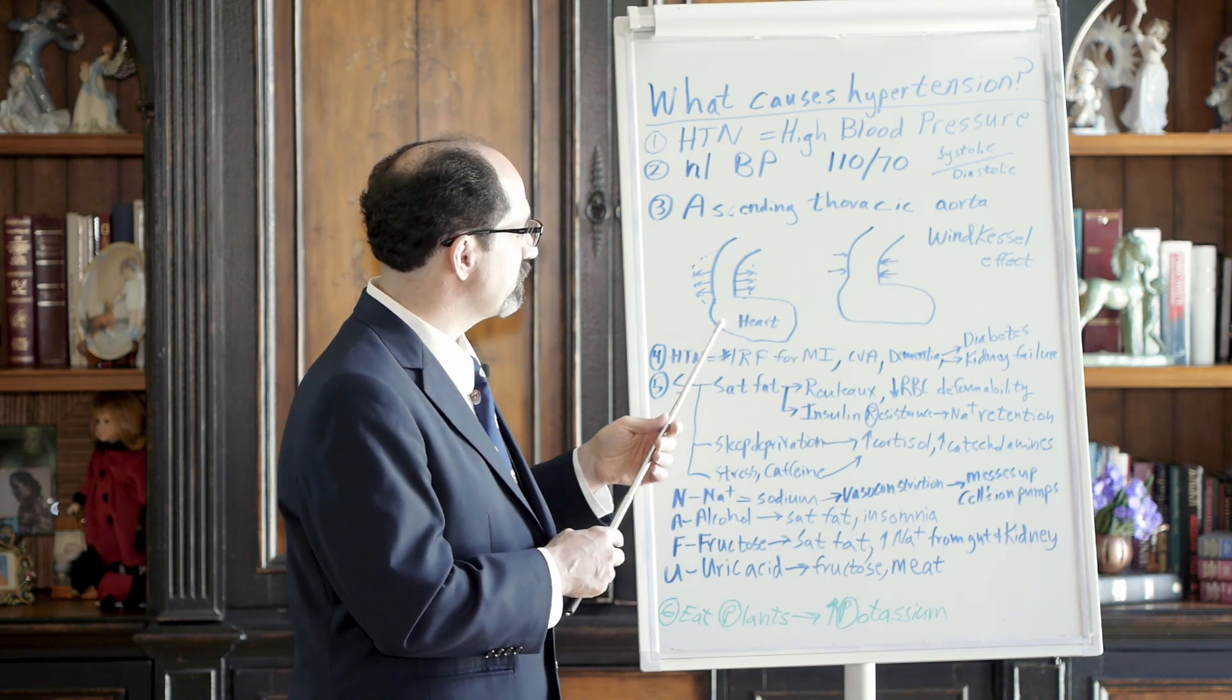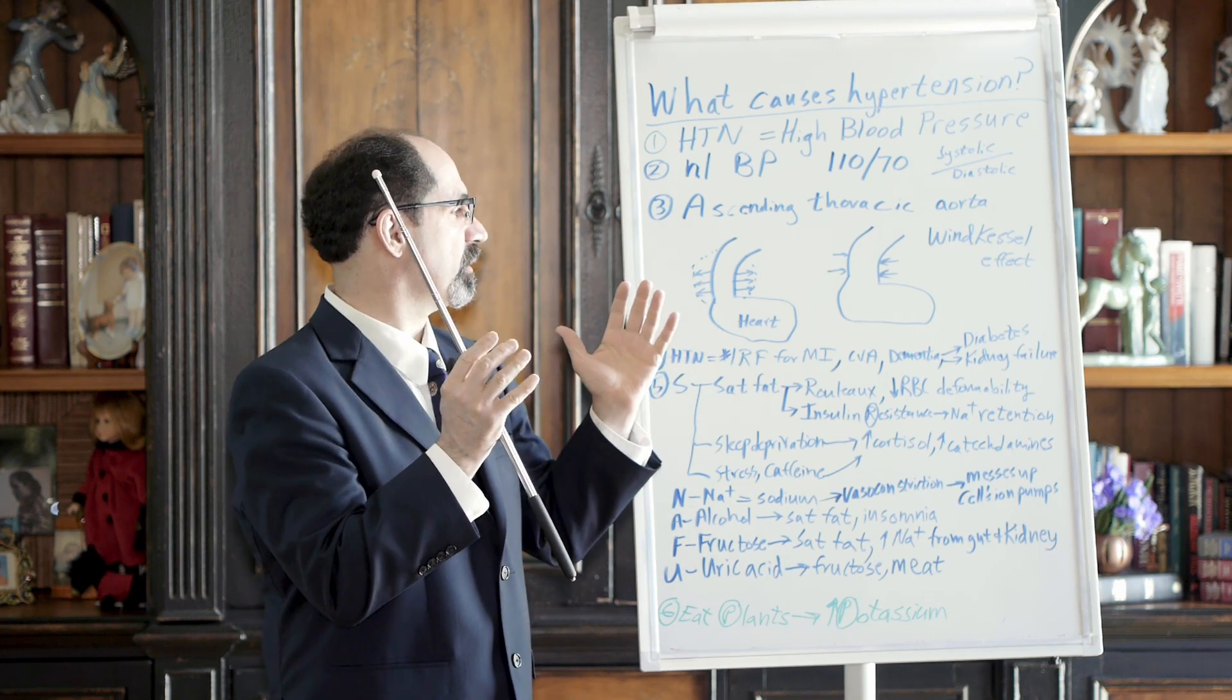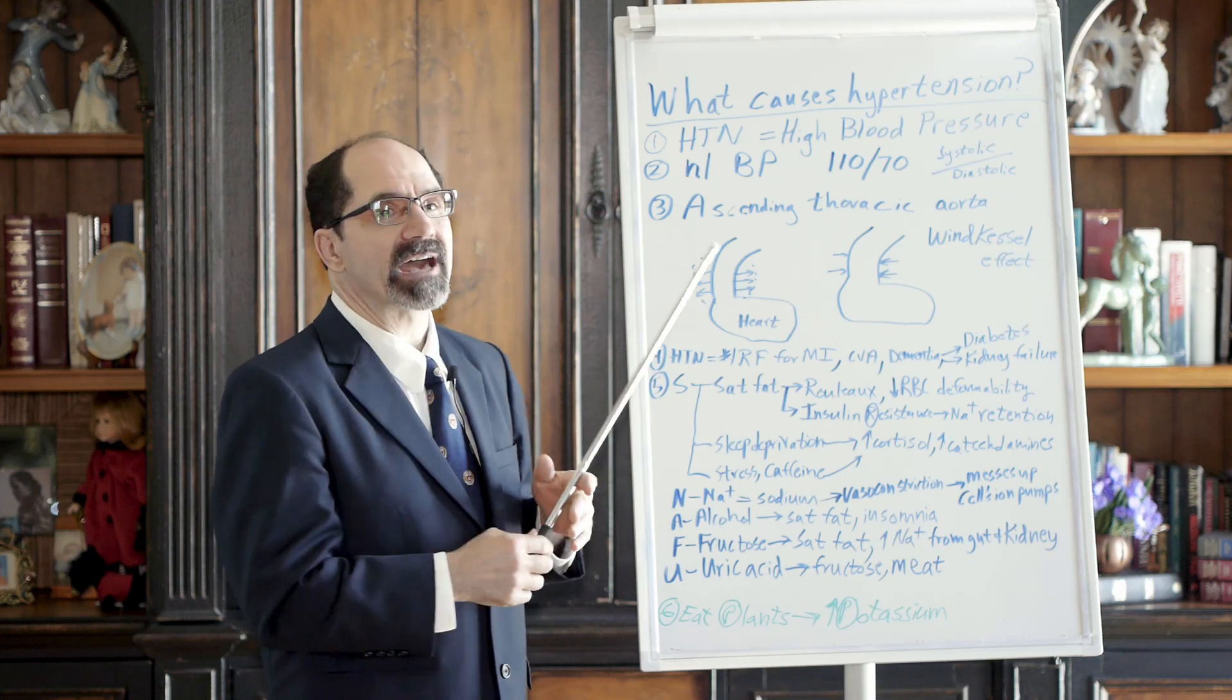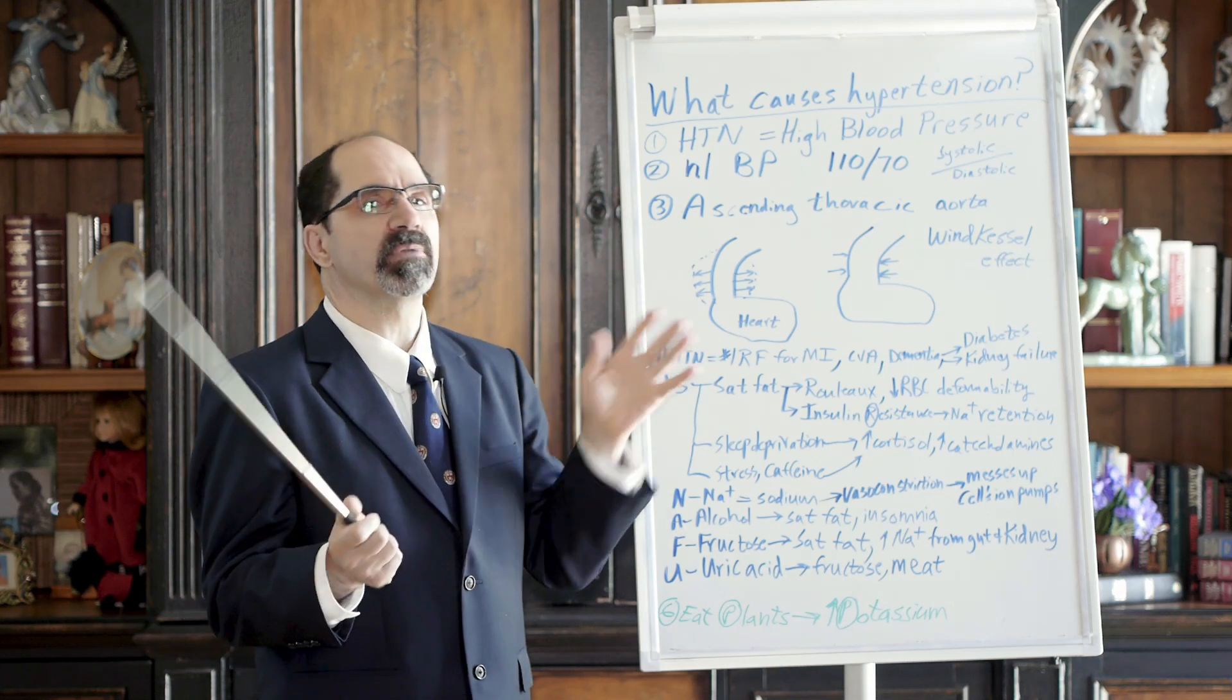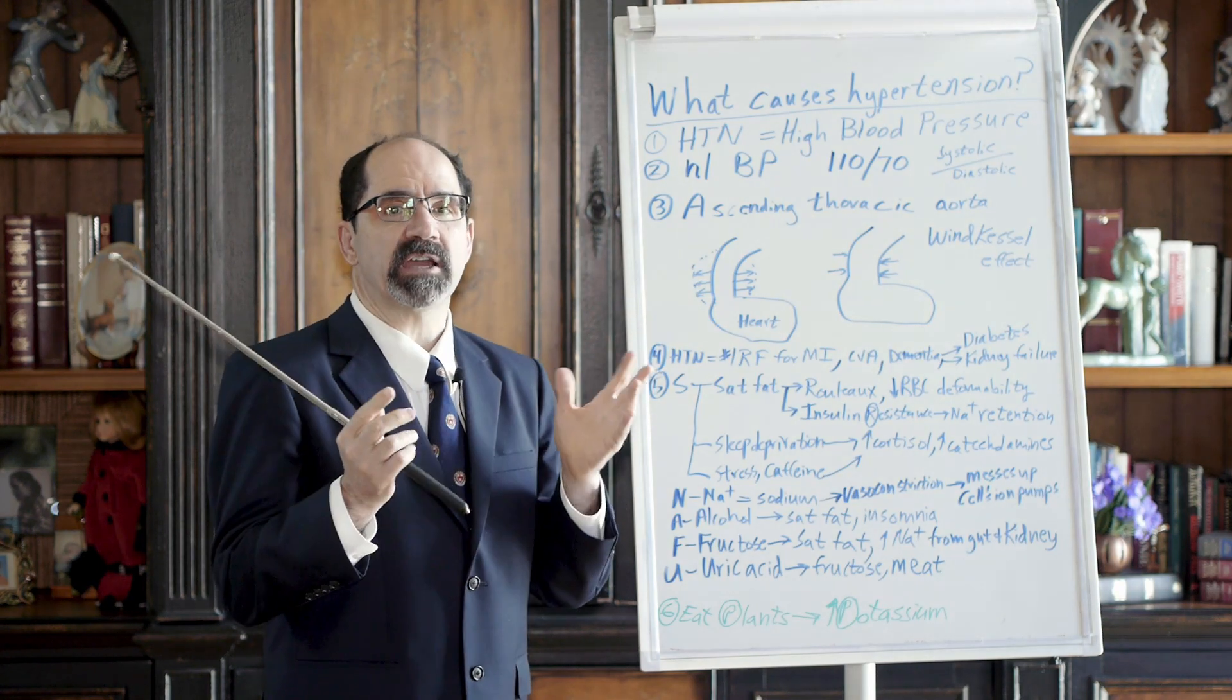When the heart pumps blood, it pumps it into ascending thoracic aorta. When that happens, ascending thoracic aorta is stretched outward. The ascending thoracic aorta has a lot of elastic fibers, more than any other blood vessel in your body. It's got tons of elastic fibers, and the ascending thoracic aorta has been called the second heart.